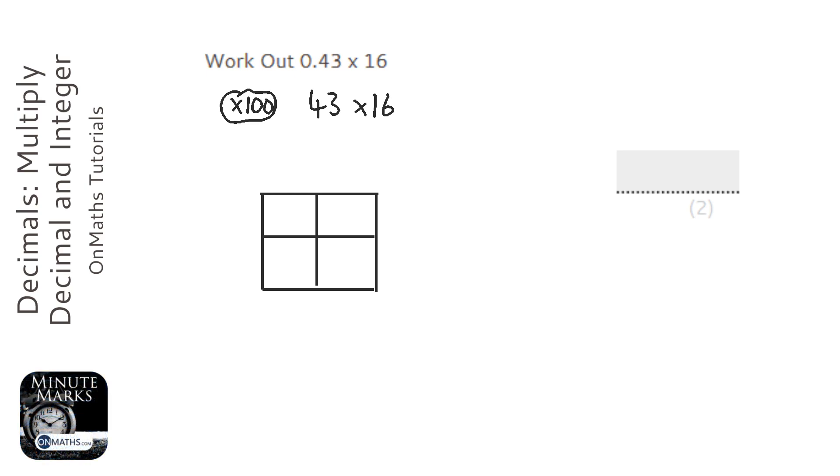So 43 is 40 and 3. 16 is 10 and 6, and we're timesing them.